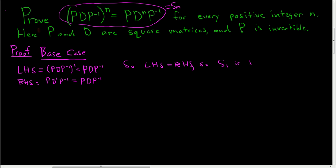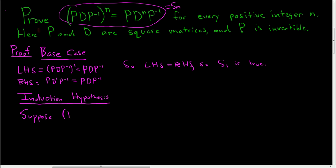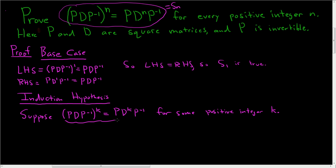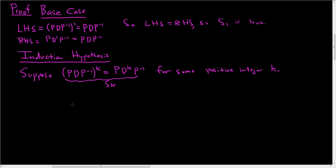The second step is the induction hypothesis. We suppose our statement is true for some positive integer k — that is, suppose (PDP⁻¹)^k = PD^k P⁻¹ for some positive integer k. This is S_k, and we're supposing S_k is true.